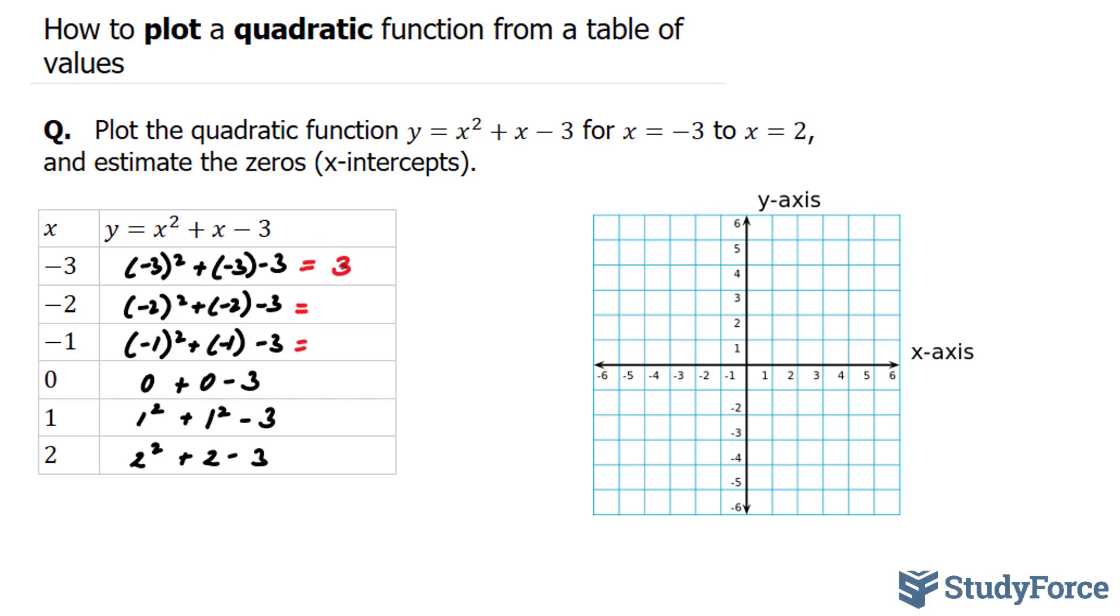So this serves as the y-coordinate for the point. Negative 2 to the power of 2 is positive 4, minus 2 is positive 2, minus this 3 is negative 1. Negative 1 to the power of 2 is 1, minus 1 is 0, minus 3 gives us negative 3. Here we end up with negative 3 as well.